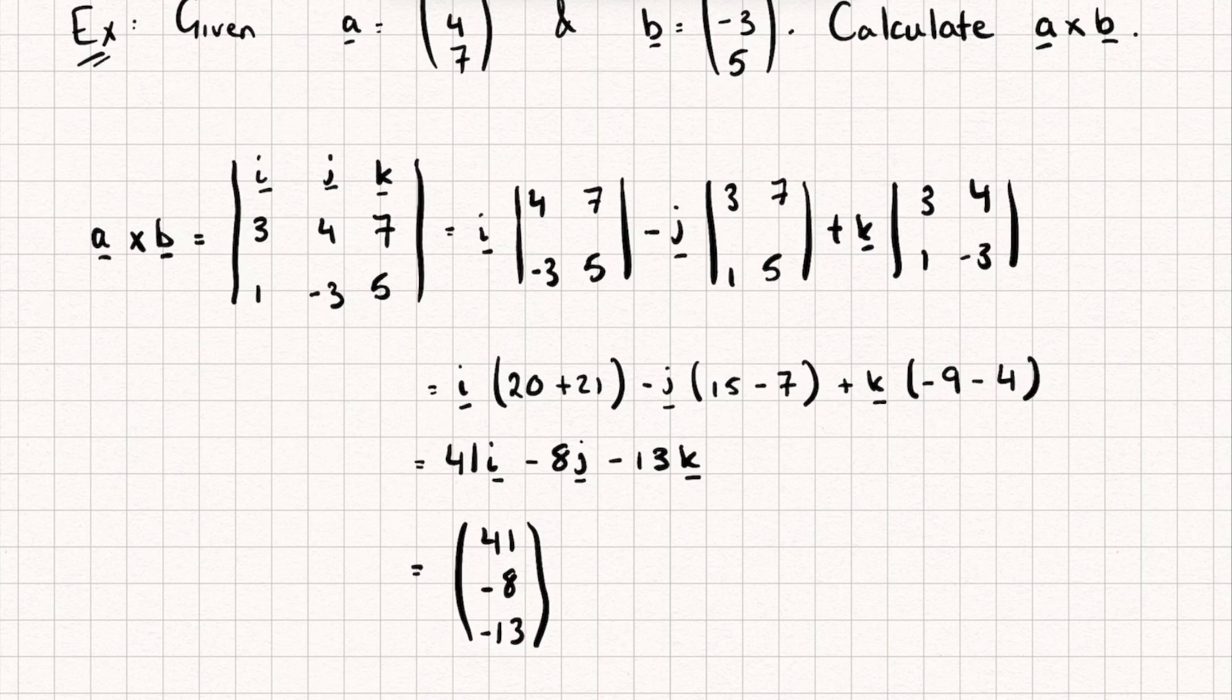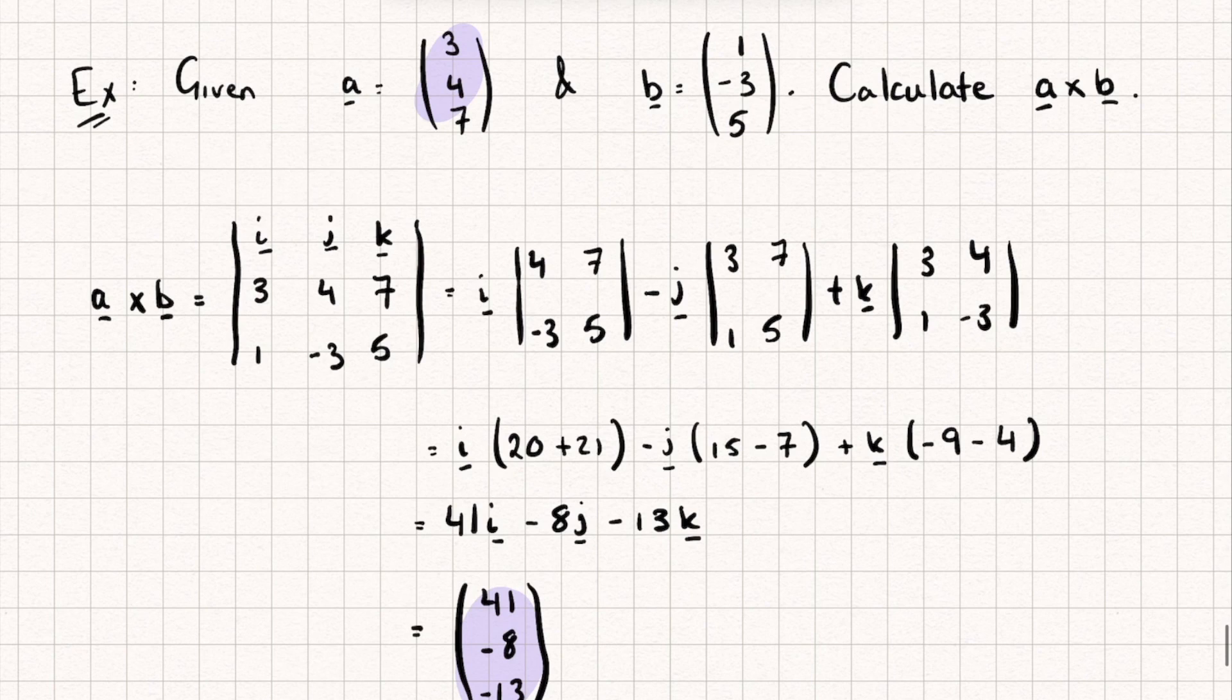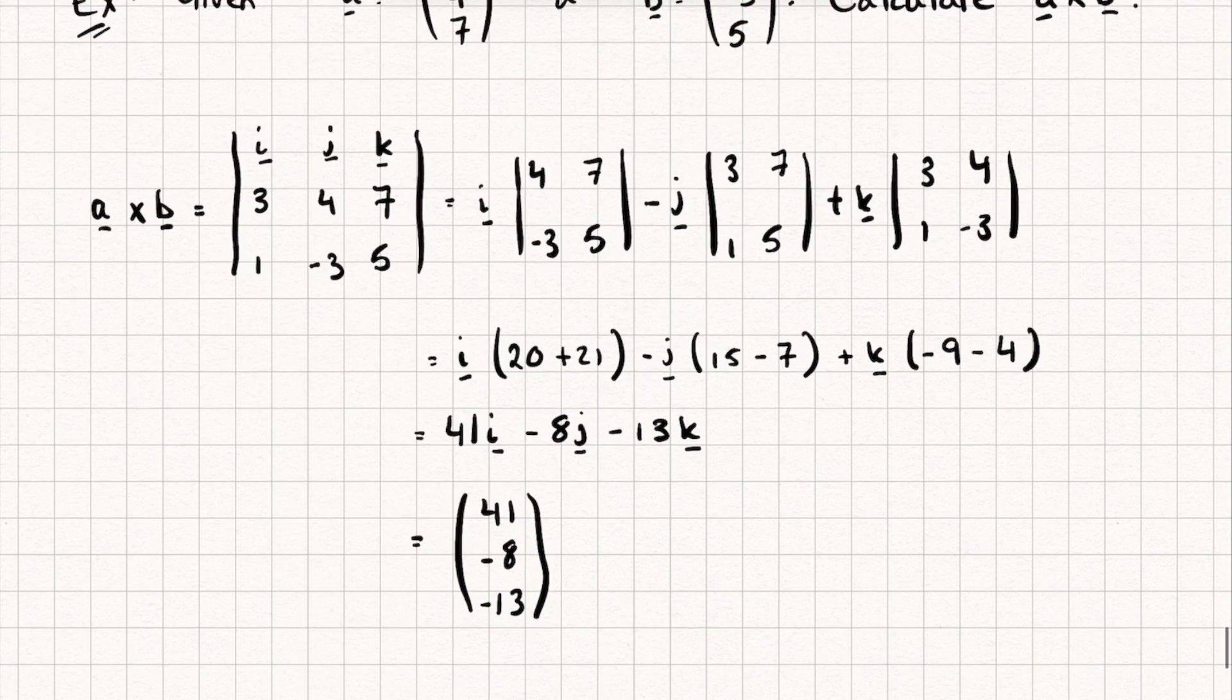And if you want, you could calculate this vector dotted with a and then this vector dotted with b, and check they both equal 0, which they should do. So hopefully this video was useful. If it was, please do like and subscribe and go over to my channel where there are tons of other maths tutorials. Thanks for watching.